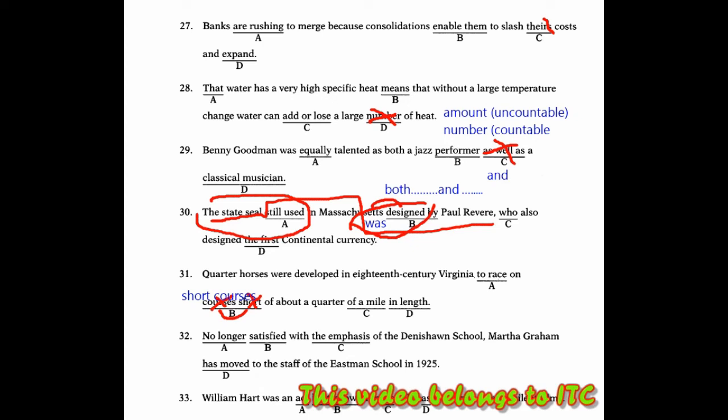We continue to section 32. No longer satisfied with the emphasis of the Danish Schoen School, Mardogram. The error in this sentence is 'has moved'. Because the time expression is in 1925, not since. If it's in 1925, it means this sentence is past tense. If the sentence is past tense, then 'has' which indicates present perfect occurs from one past time, at a certain time continuing until now. That is present perfect and is one clause.